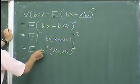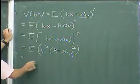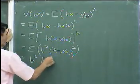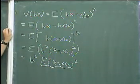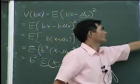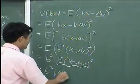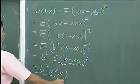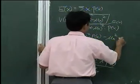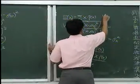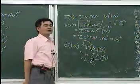Since B squared is a constant, we can move it out: B squared times expectation of (X minus mu X) squared. And what is expectation of (X minus mu X) squared? That is V(X). So we have B squared times V(X). If we know V(X) equals sigma X squared, then V(BX) equals B squared times sigma X squared.